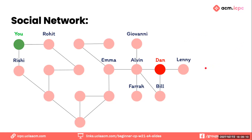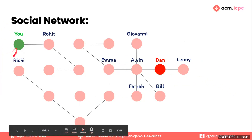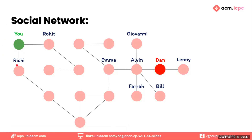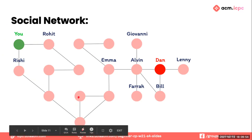We have Devilman Dan in red over here. He's friends with Alvin, Bill, and Lenny, so we fill those in. Alvin is friends with Emma, Bill, Giovanni, and Farah, so we add those. If we knew the rest of the list, we could fill it all in. Now we have a structure that makes it much easier to see how close any two people are. The circles represent people, and the lines represent phone calls. For Emma, we can clearly see that the least number of phone calls she needs to make is two: call Alvin, who calls Dan.